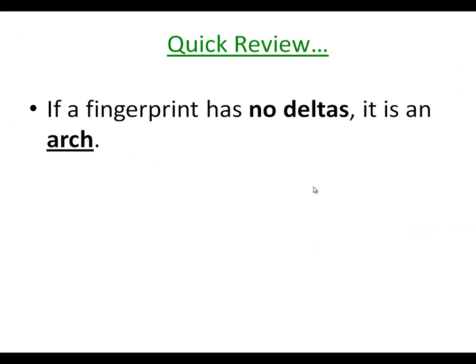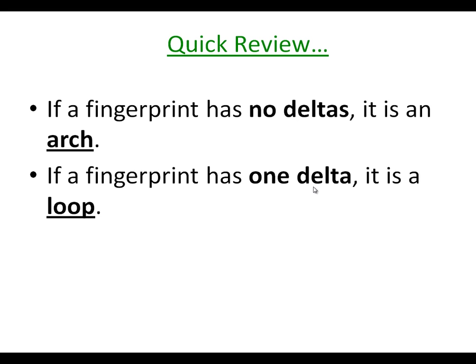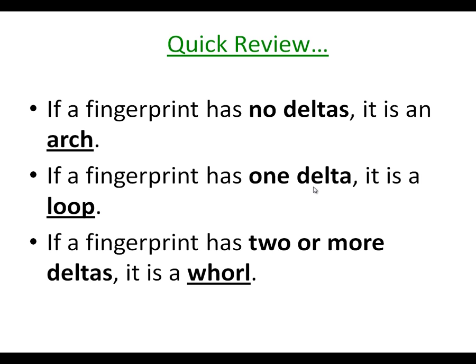Alright, so just as a quick review: remember if it has no deltas, we consider it to be an arch. If it has one delta, we consider it to be a loop. And if it has two deltas, we're going to consider it to be a whirl. That should be able to help you out a little bit when you take your quiz.